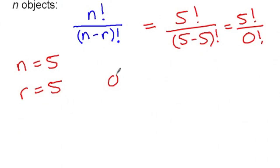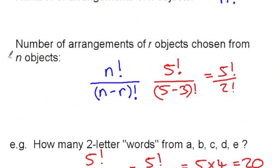you will see that zero factorial is actually one. And so five factorial divided by zero factorial is five factorial over one, or simply five factorial, which fits with our earlier observation that the number of arrangements of n objects is just n factorial. So really this is a special case of this formula.